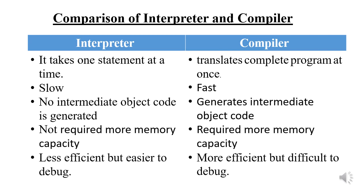After an error is displayed while translating a program by the interpreter, the error must be corrected in order to translate the next statement. But the compiler shows all the errors at the same time, and a program cannot be executed without correcting all those errors. While the compiler is more efficient in converting a program, it is difficult to find errors.